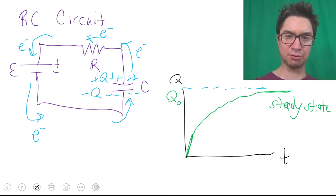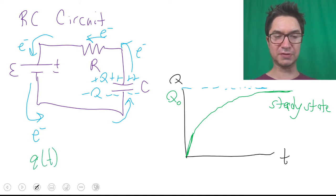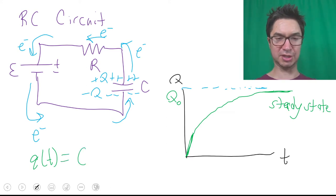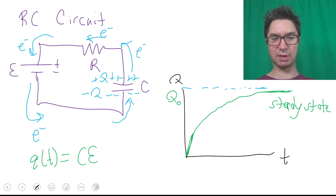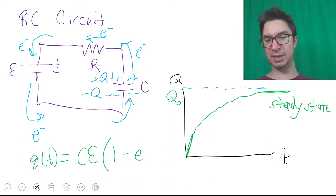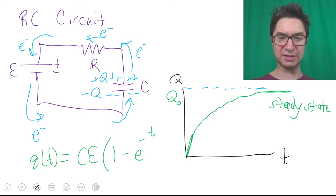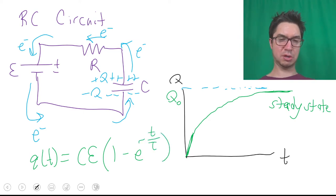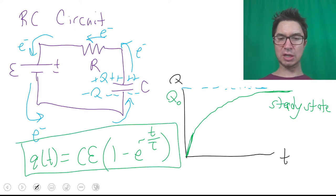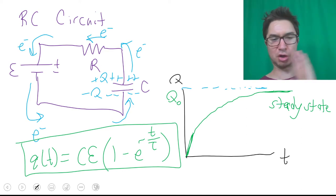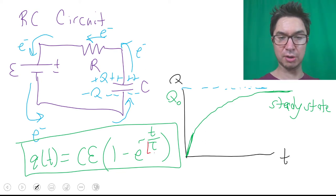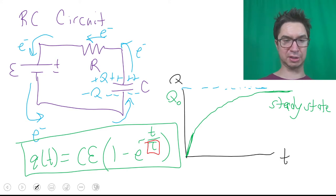The question is: what mathematical function does this represent? With the methods of calculus we can derive this function. Charge as a function of time Q(t) is equal to the capacitance C times the EMF epsilon times the quantity one minus e raised to the negative t over tau, where e is Euler's number, the base of the natural logarithm. Let's unpack this — I've introduced charge, capacitance, EMF, and this new quantity I'm circling in red: the time constant tau.